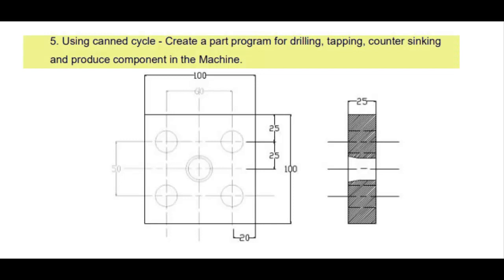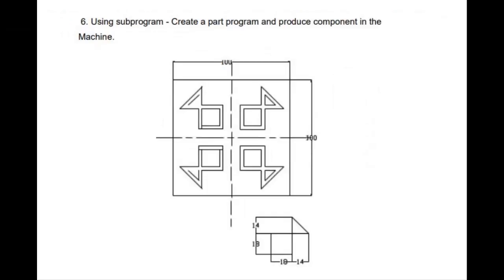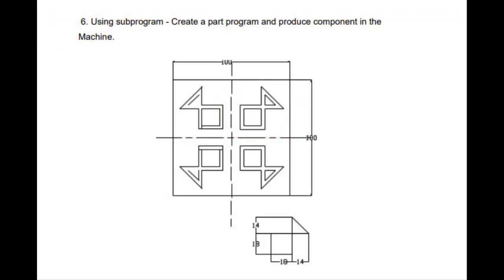The second milling exercise uses canned cycles to create a part program for drilling, tapping, counter-sinking, and producing the component on the machine — using M5, M6, M8 taps. The third milling exercise uses sub-programs to produce an axis-symmetrical component across four quadrants, using the mirroring concept and sub-program concept for profile milling.